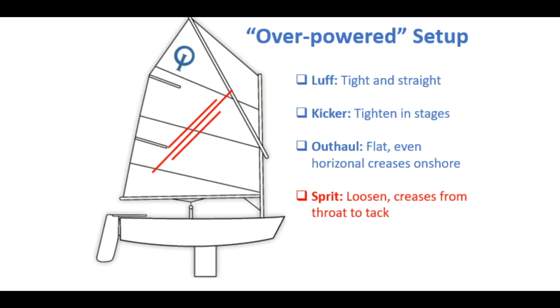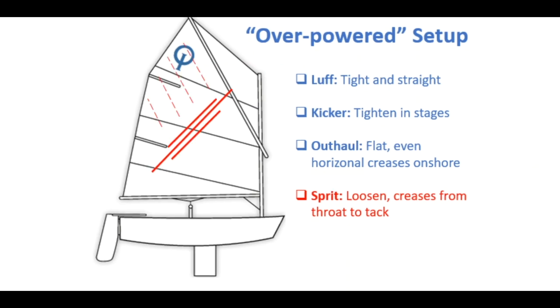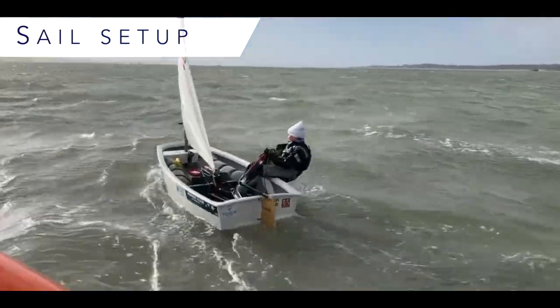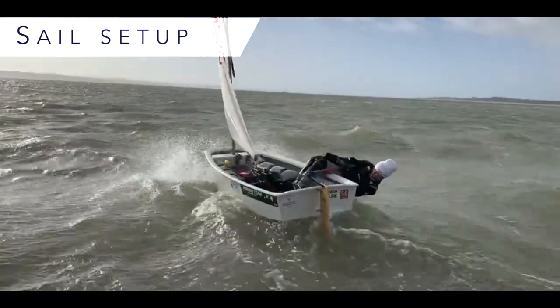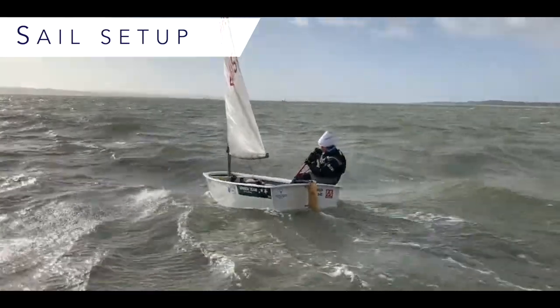However, when we reach the tipping point and the boat begins to feel overpowered, we now ease the sprit, allowing the top section of the sail to just fall away. To counteract this, we now must move our mast rake backwards again to re-balance the boat, as the center of effort has now moved forward.